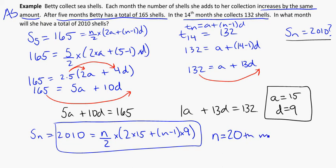So here, n equals 20. So on the 20th month, she will have that many shells. That's it really. We know that it will be 2010 shells. So that's our answer.